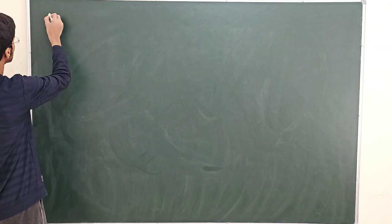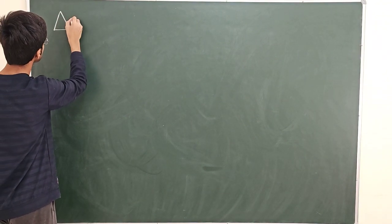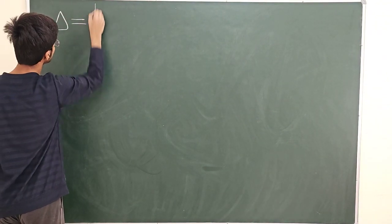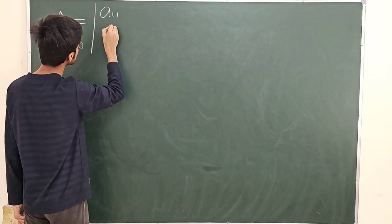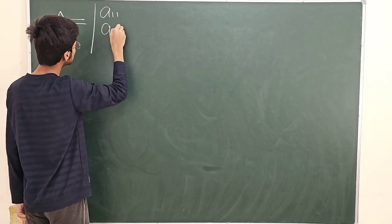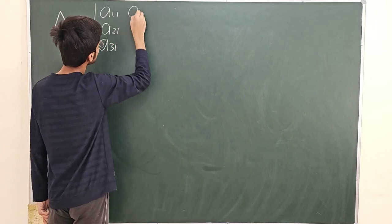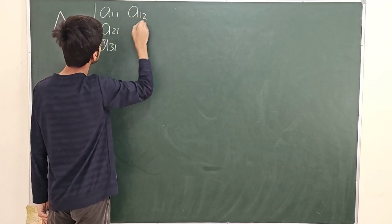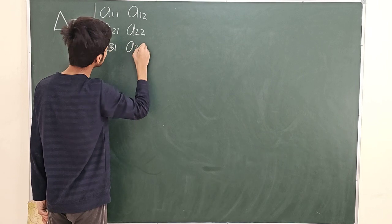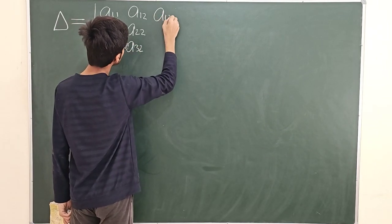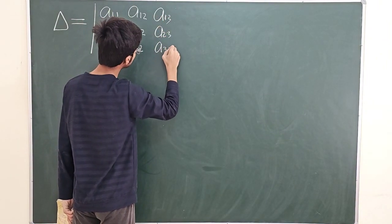To understand this property, consider a determinant with elements a₁₁, a₂₁, a₃₁ in the first column, a₁₂, a₂₂, a₃₂ in the second column, and a₁₃, a₂₃, a₃₃ in the third column. The determinant could be 4×4 or 5×5 as well.